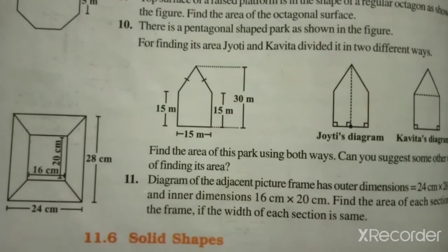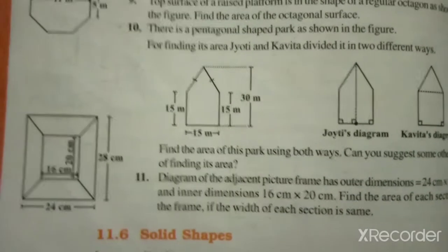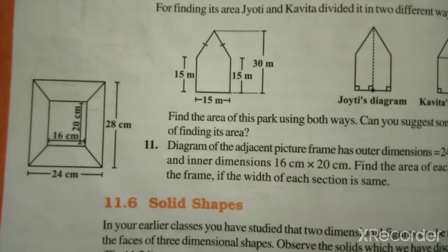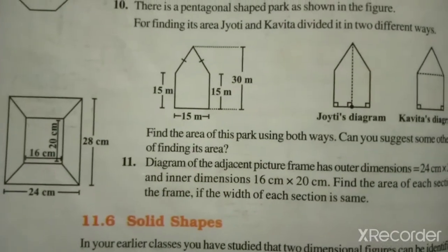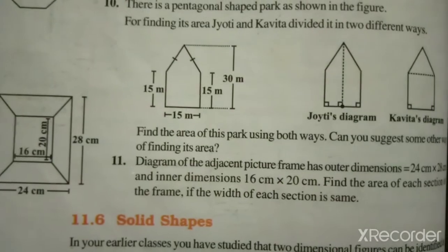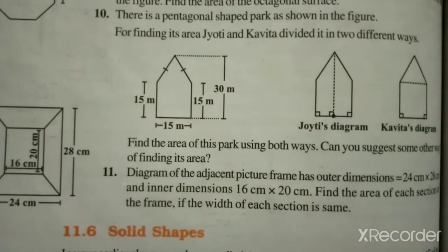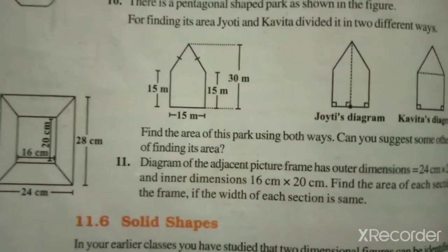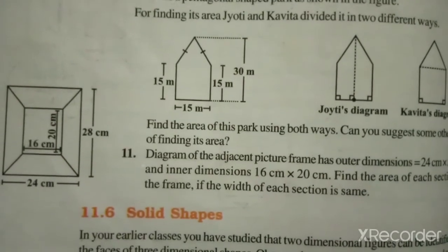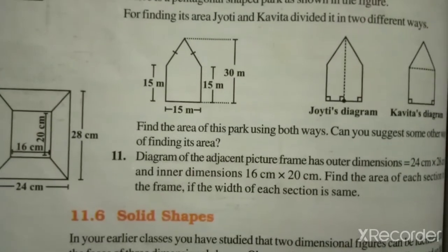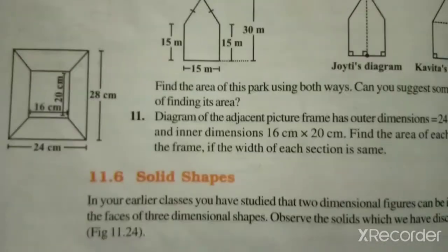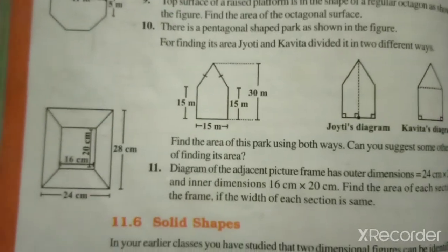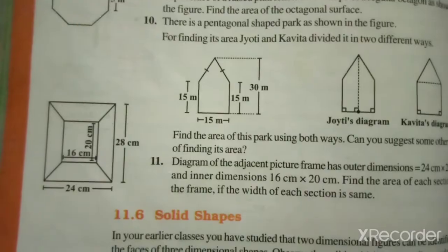Hello students. Here at syllabus 8th standard, mensuration lesson, exercise 11.2, 11th sum. The diagram of the adjacent picture frame has outer dimensions 24 cm and 28 cm, and inner dimensions 16 cm and 20 cm. Find the area of each section of the frame if the width of each section is the same.